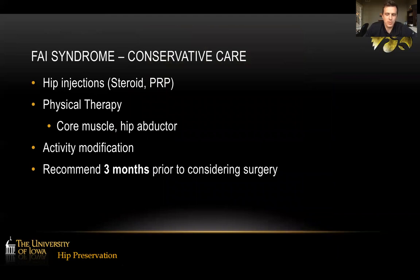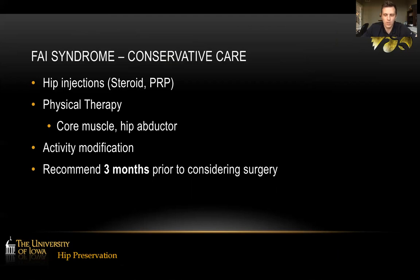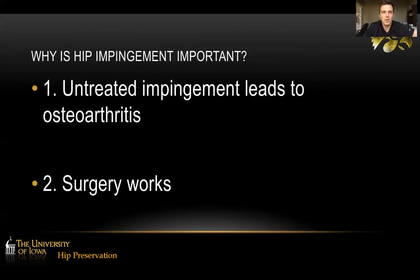FAI syndrome is typically treated conservatively at least at first. We do discuss and offer corticosteroid or PRP injections — I'm not a huge fan of injections for this issue, but occasionally we use them to get athletes through seasons or when patients want to exhaust all options before surgery. Physical therapy is the mainstay of conservative care, focusing on core muscle strengthening, lumbar mobility, and hip abductor strengthening. Activity modification and cessation from sports or dancing in certain circumstances are also recommended. We recommend three months of conservative care before considering surgical treatment.